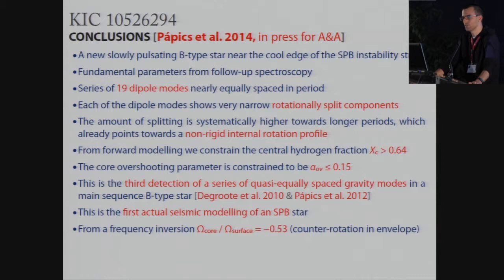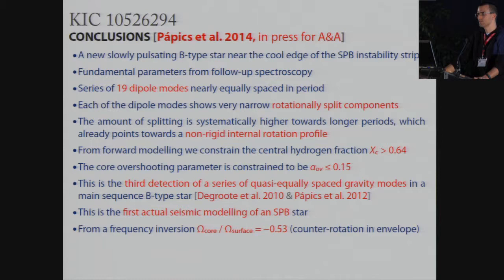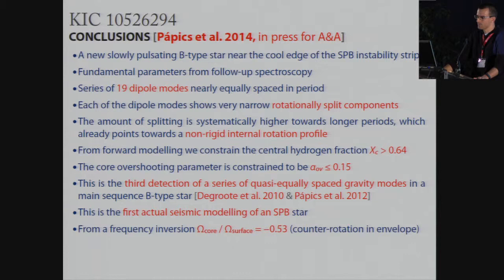In conclusion, for KIC 10526294 we have delivered a new SPB pulsator, derived fundamental parameters from follow-up spectroscopy, and found a series of 19 consecutive dipole modes which are nearly equally spaced in period. Each of these dipole modes shows very narrow rotational split components, and the amount of splitting is systematically higher towards longer periods, already pointing towards a non-rigid internal rotation profile. Forward modeling constrained the central hydrogen fraction to be over 0.64 — so the star is very young — and the core overshooting parameter to be less than or equal to 0.15. This is the third detection of quasi-equally spaced gravity modes in a main sequence B-type star, and the first actual seismic modeling of an SPB star. From the frequency inversion we find counter-rotation in the envelope.